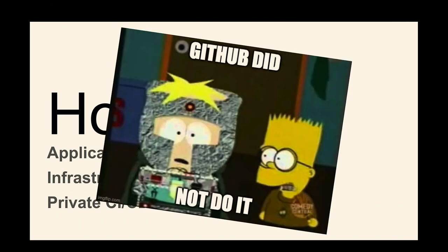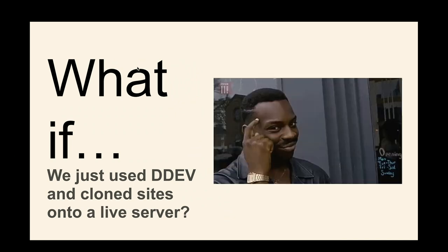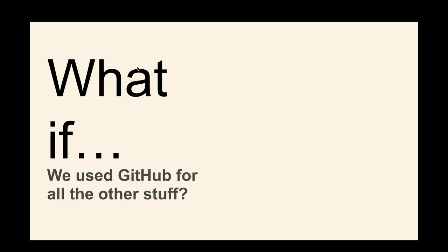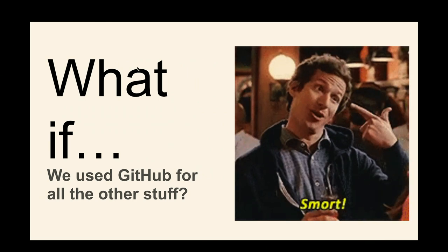Application hosting, infrastructure as code, and private CI — GitHub doesn't really do that. But what if we just use DDEV and clone sites on a simple server? Because everything in Linux — actually in Docker — but DDEV start and DDEV CI is going to make the concept. You can find out ways to install it and automatically do things. I want sites to persist. What if we just clone them and start them? What if we just use GitHub for all the other stuff? Super smart idea I realized.